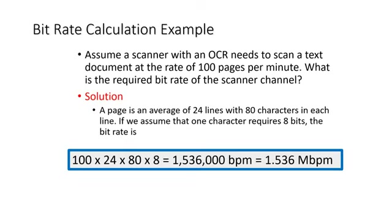In this example, we will see how to calculate the required data rate of an object character reader, or OCR, in a scanner to convert text into a digital document. Assume a scanner with an OCR needs to scan a text document at 100 pages per minute, with a page averaging 24 lines with 80 characters per line, and each character is 8 bits. To compute bit rate, we multiply 100 pages per minute by 24 lines per page by 80 characters per line by 8 bits per character, to get 1,536,000 bits per minute, which is equivalent to 1.536 megabits per minute. This shows that data rate applies not only to networks but also to device communication between internal components.